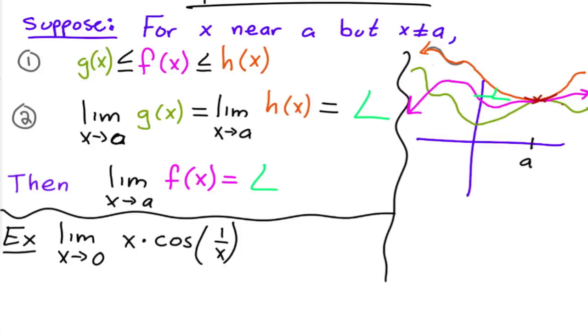Notice that if we do our usual plug it in, we would get 0 times cosine of 1 over 0—that's going to infinity. Now what's cosine of infinity? Well cosine just keeps going up and down and up and down, so this doesn't actually exist.